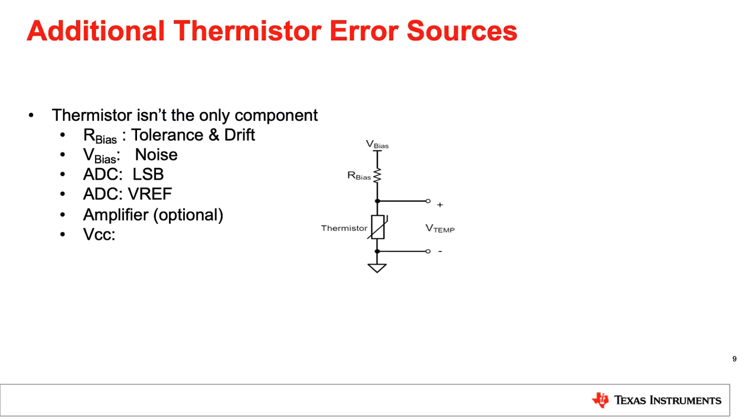When it comes to thermistors, it's also very important to examine the complete circuitry to understand the actual accuracy that can be achieved. In a typical voltage divider topology, the achieved accuracy will also be dependent on the bias resistor, its tolerance, and how much that resistor drifts with temperature as well. If tied directly to the supply, any supply noise will also be passed through to the thermistor reading. It's also necessary to take a look at the error contribution of the ADC and any additional amplifiers in the circuit.